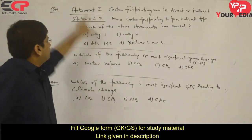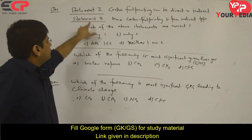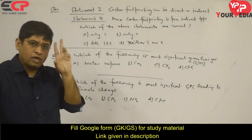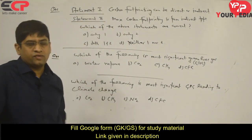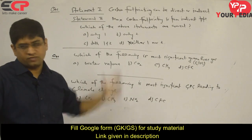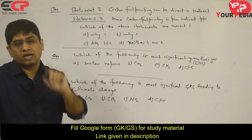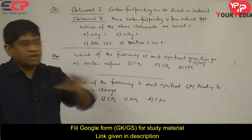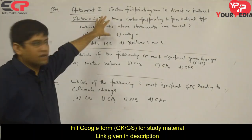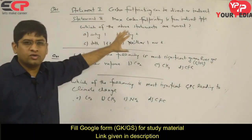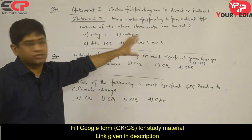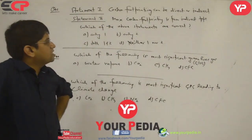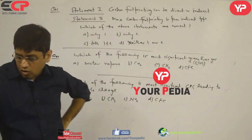Now, statement one and statement two questions. There are two types: first, where statements must be related and A/B/C/D choices are given; second, where you only judge which statement is correct or incorrect. The question here: Statement one — carbon footprinting can be direct or indirect type.